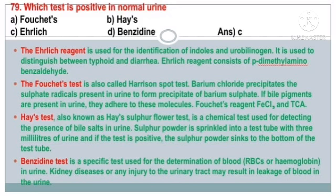The Haze test, also known as the Hay's sulfur flower test, is a chemical test used for detecting the presence of bile salt in urine. Sulfur powder is sprinkled into a test tube with 3 ml of urine, and if the test is positive, the sulfur powder sinks to the bottom. The Benzidine test is a specific test used for the determination of blood in urine. Kidney diseases or any injury to the urinary tract may result in leakage of blood in the urine.